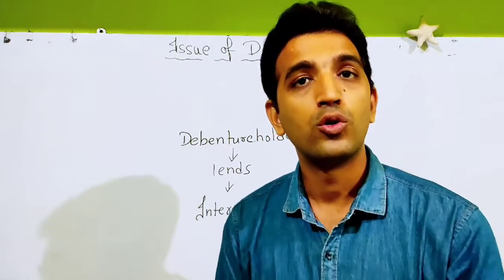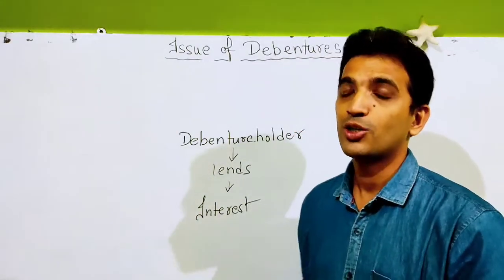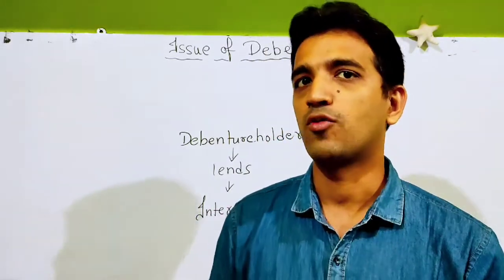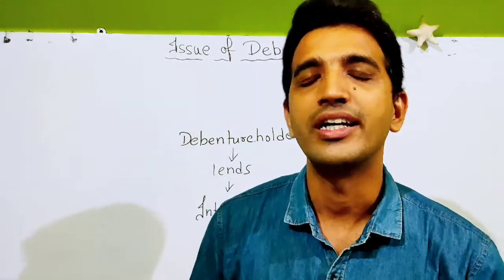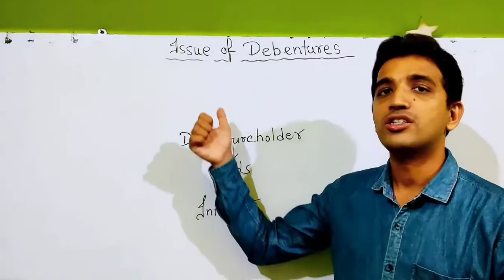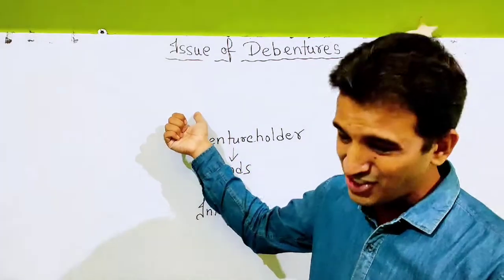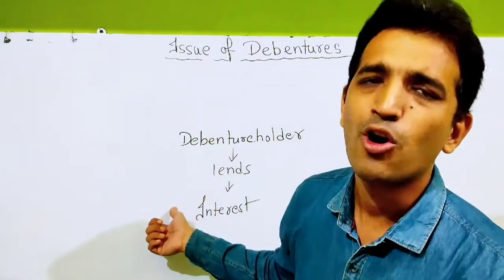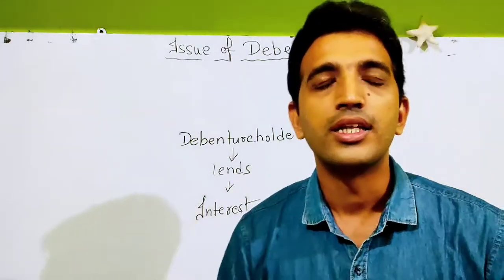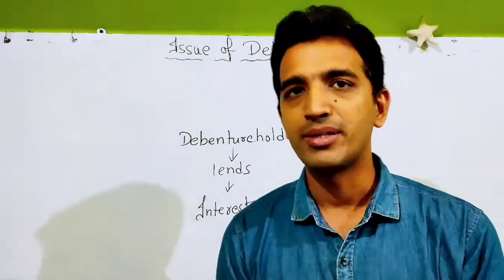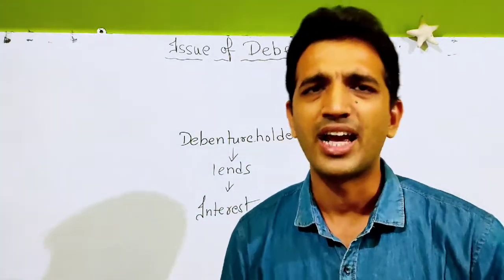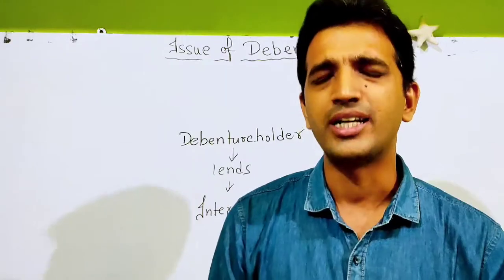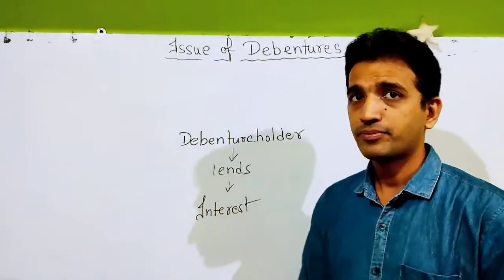Debenture profit हो या नहीं, you will pay interest because they are outside people who have lent money to the company. They are doing this so that they can get regular interest. The person who holds debentures is known as a debenture holder — they are the lenders for the company. The company borrows from them and pays them interest on a regular basis — it can be quarterly, half yearly, or annually. Normally half yearly and annually, depending upon the company.